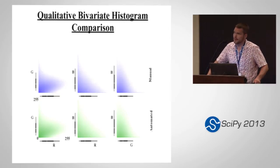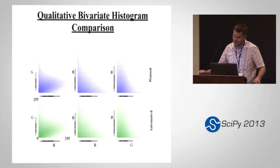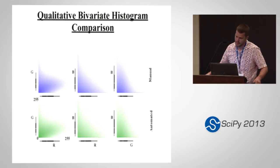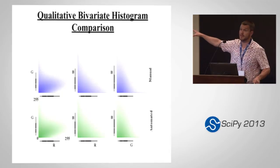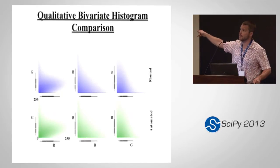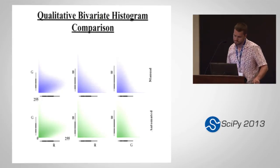We also wanted quick sanity checks on the distributions, particularly the bivariate distribution of pairwise channels: red to green, green to blue, and so forth. If you're familiar with bivariate histograms of image data, this may look a little odd — that's because this is in log scale probabilities, because we wanted to make sure the tails were behaving well.